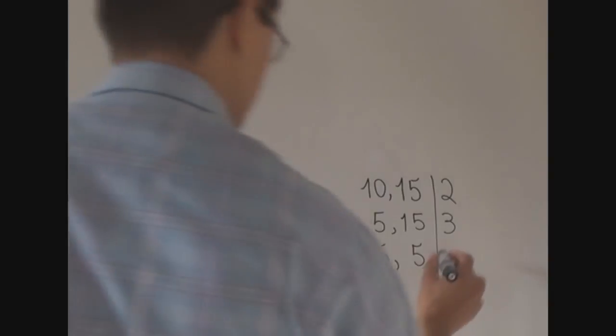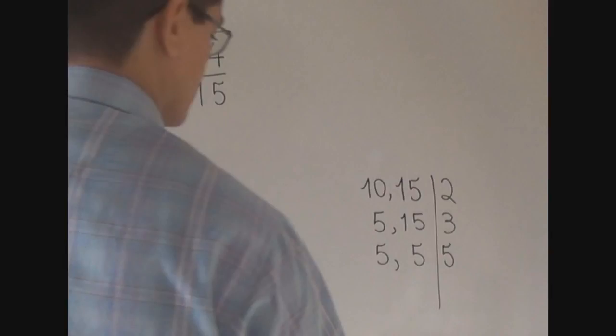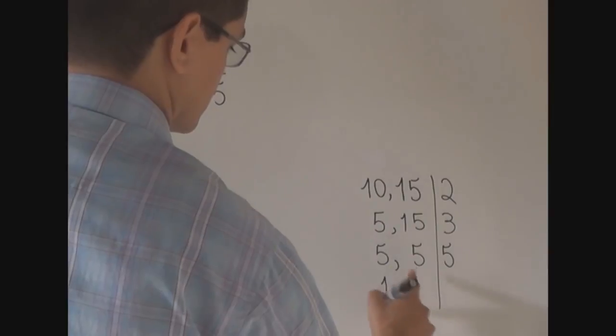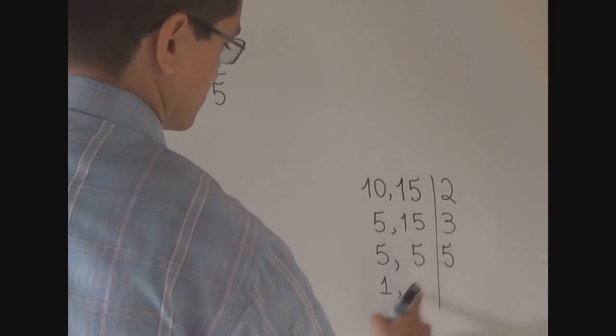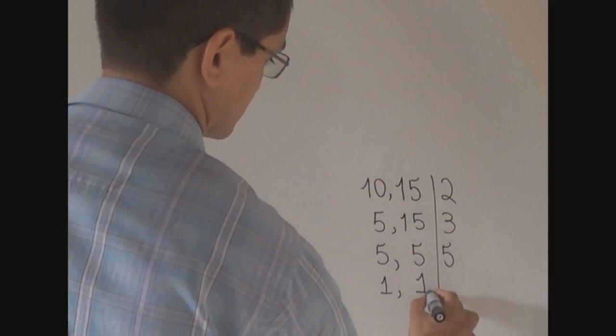So, in order to continue the simultaneous factorization, rewrite 5 in the right column. What do we get now? 5 divided by 5 equals 1, right? So, we write 1 below the first 5 and 1 below this other 5.